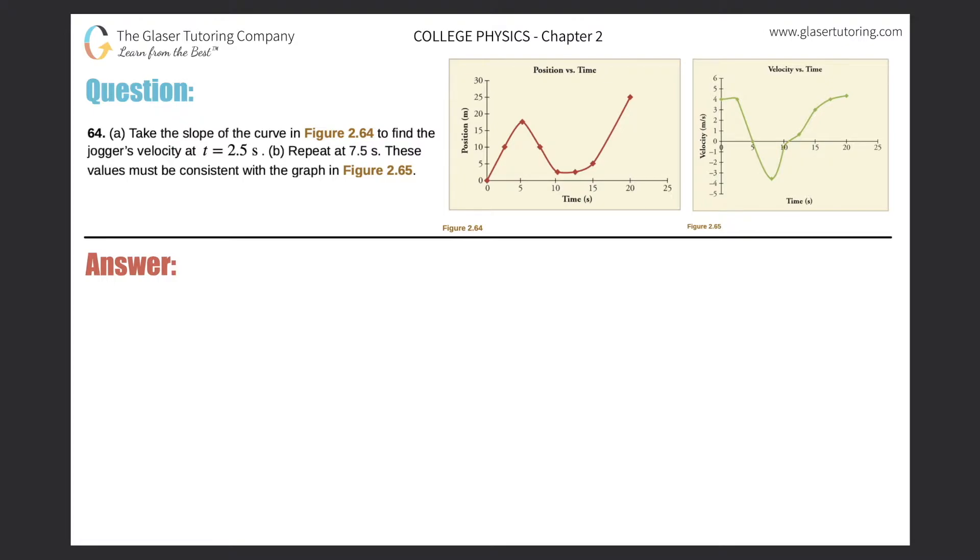Number 64, letter A. Take the slope of the curve in figure 2.64 to find the jogger's velocity at time equals 2.5 seconds. So let's take a look at this figure 2.64.